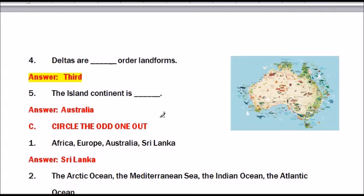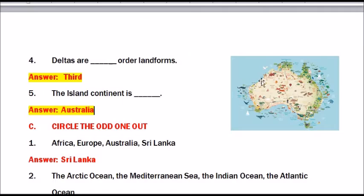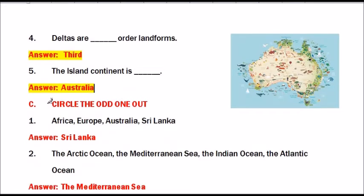Deltas are third order landforms. Question number 5: The island continent is Australia.